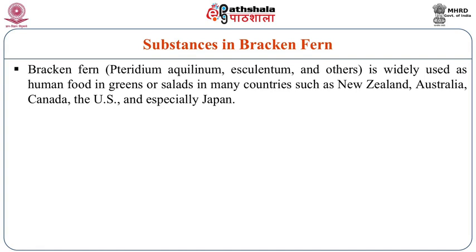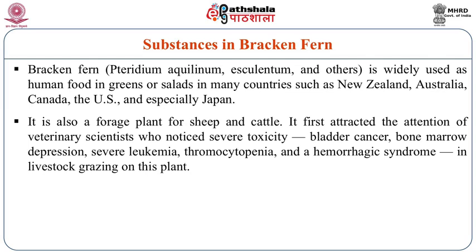Next are the toxicants present in bracken fern. Bracken fern is widely used as a human food — as green salads — in many countries like New Zealand, Australia, Canada, the US and especially Japan. It is also a forage plant used for sheep and cattle. It first attracted the attention of veterinary scientists who noticed severe toxicity such as bladder cancer, bone marrow depression, severe leukemia, thrombocytopenia and hemorrhagic syndrome in livestock grazing on bracken fern.